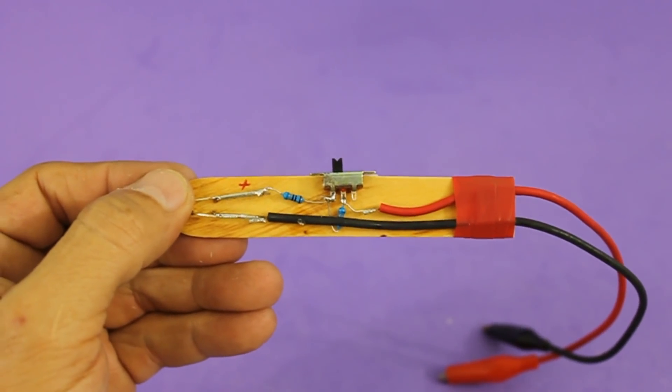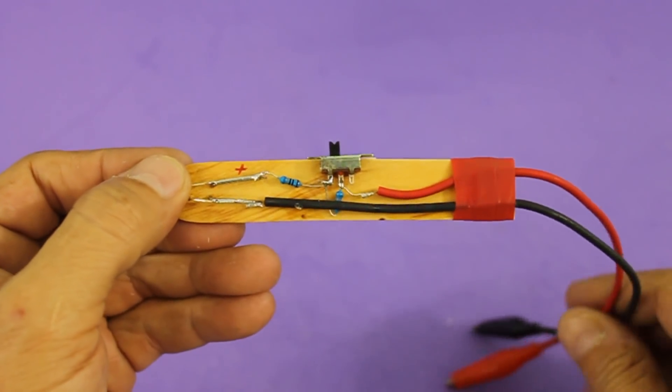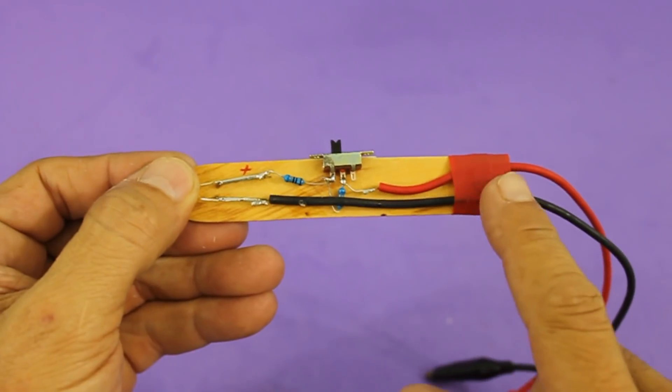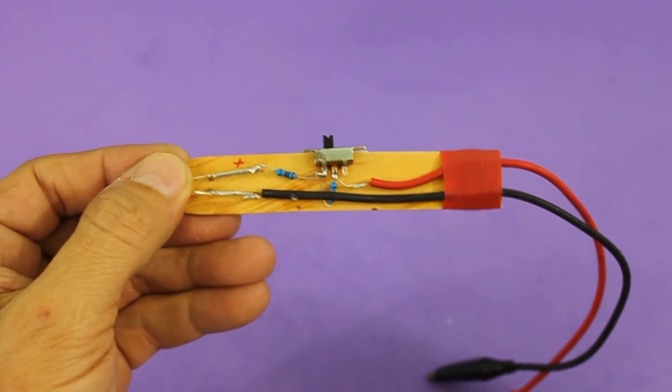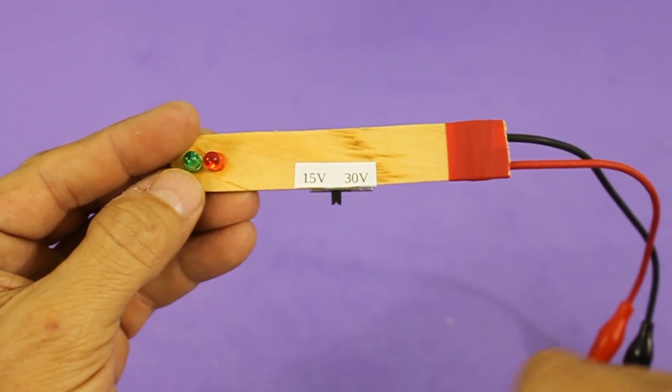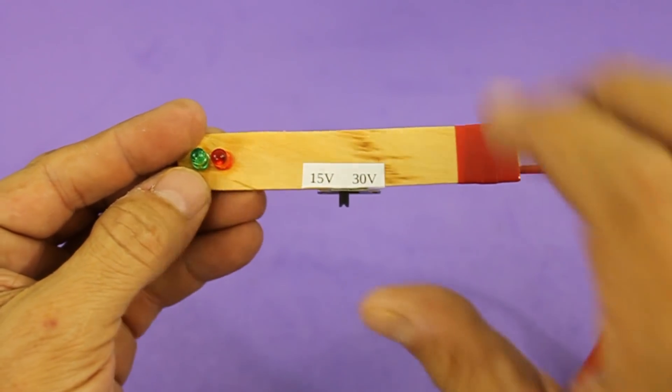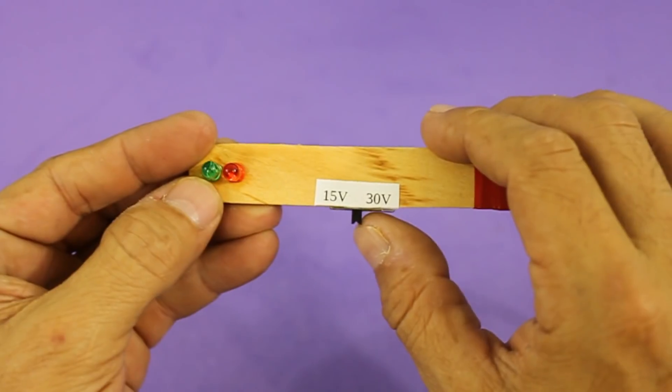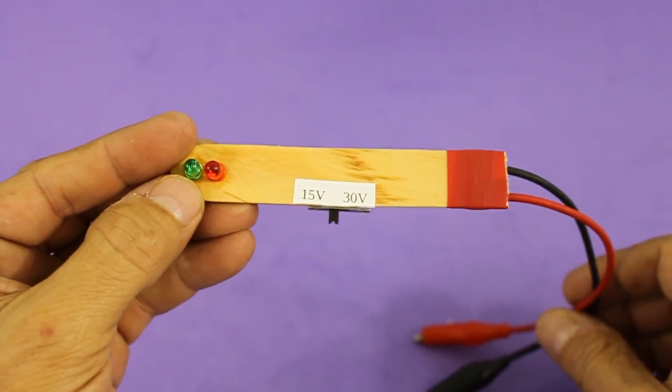To complete the project I soldered the two alligator wires and put some tape to fix them and I also glued a label indicating the maximum voltages that can be tested in each position. Now let's proceed to test it.